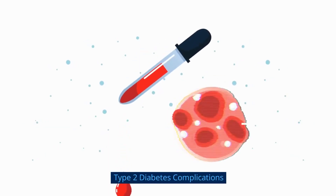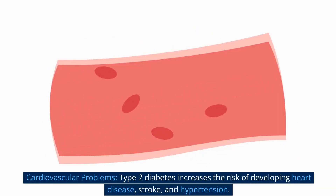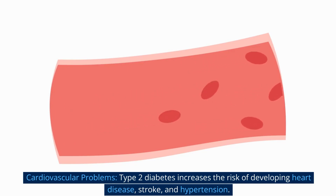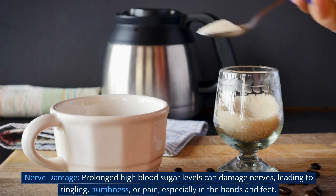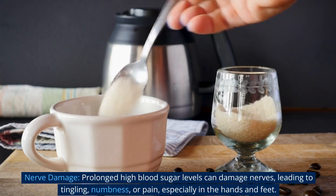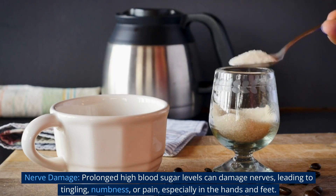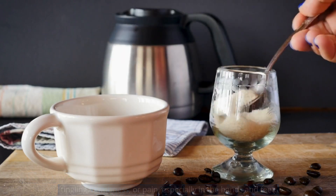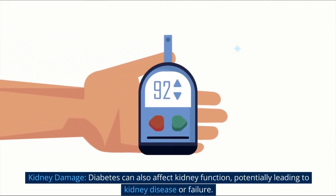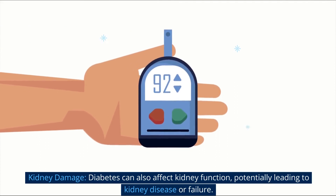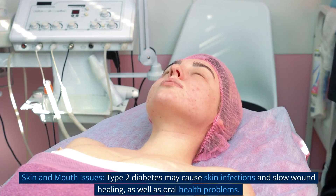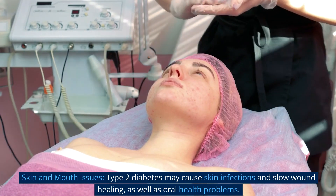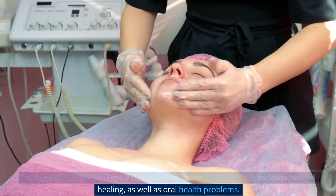Type 2 diabetes complications include: cardiovascular problems — Type 2 diabetes increases the risk of heart disease, stroke, and hypertension; nerve damage — prolonged high blood sugar levels can damage nerves, leading to tingling, numbness, or pain, especially in the hands and feet; kidney damage — diabetes can affect kidney function, potentially leading to kidney disease or failure; and skin and mouth issues — Type 2 diabetes may cause skin infections, slow wound healing, and oral health problems.